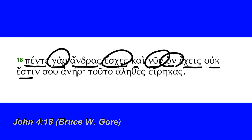'Ouk estin' — 'ouk estin' is 'not,' 'estin' of course from 'eimi,' this is the third person singular. 'Su aner' — this one that you have now, 'aner,' is not. So it is 'ouk su aner.' The 'su' would normally come after the word 'aner,' but to add a bit of emphasis, Jesus — in the way that John expresses it here — puts the possessive pronoun in front of the word 'aner,' so 'he is not your husband,' emphasizing slightly that word 'your.'